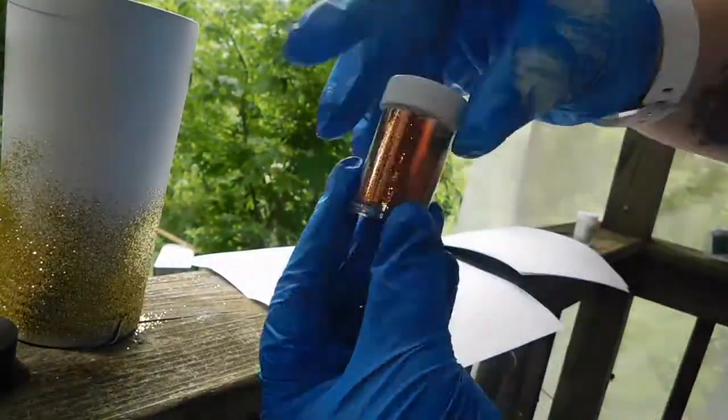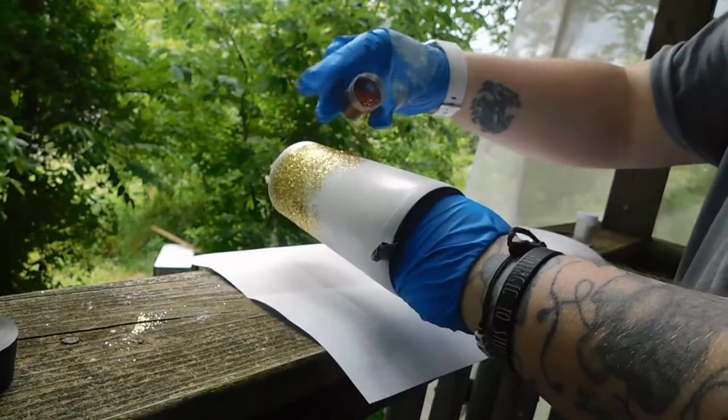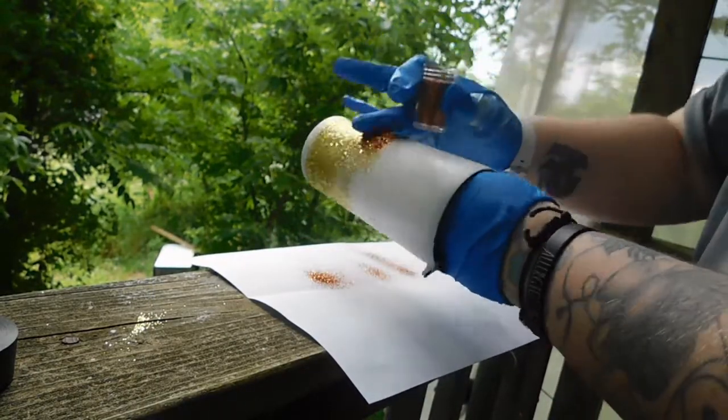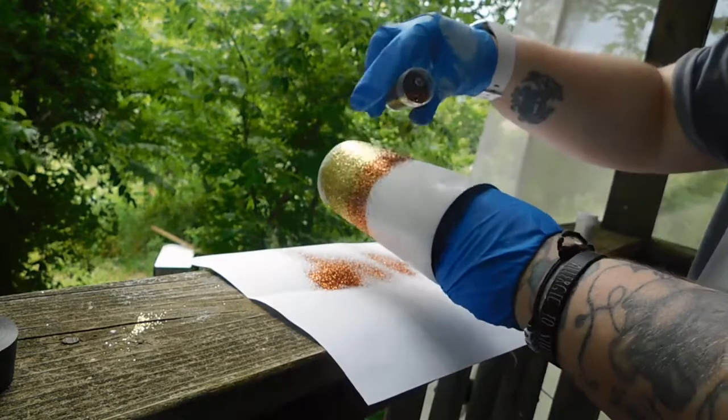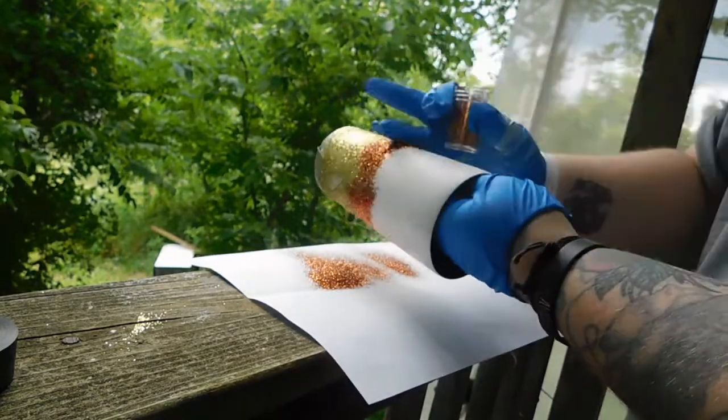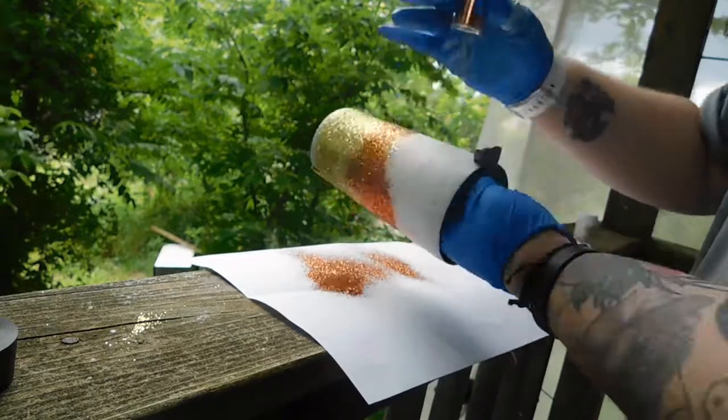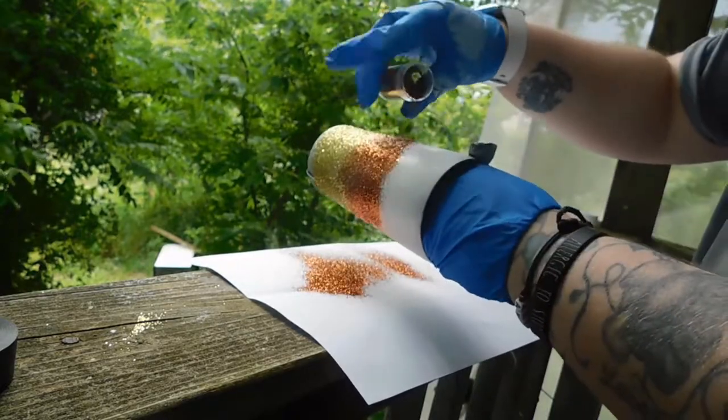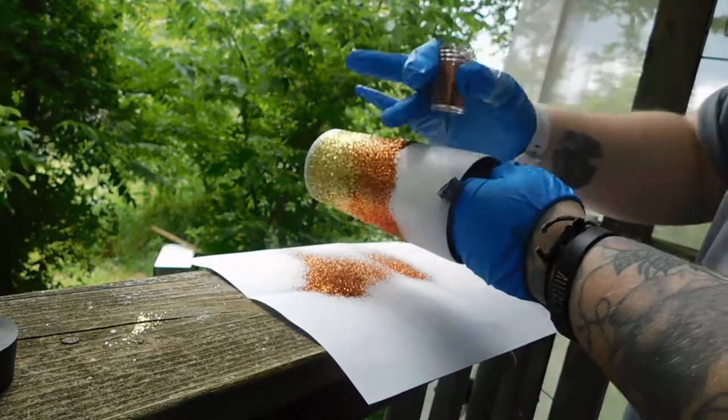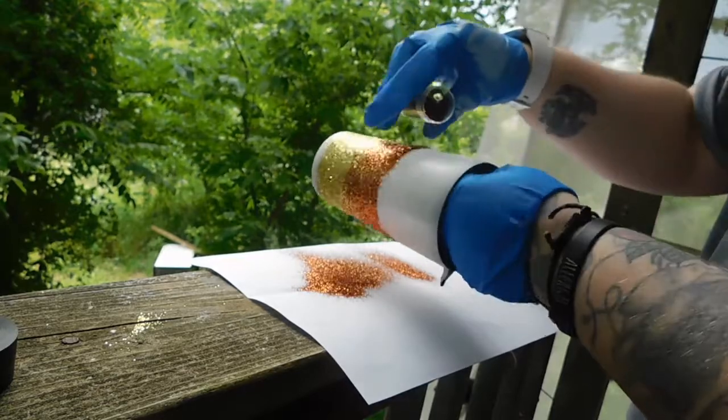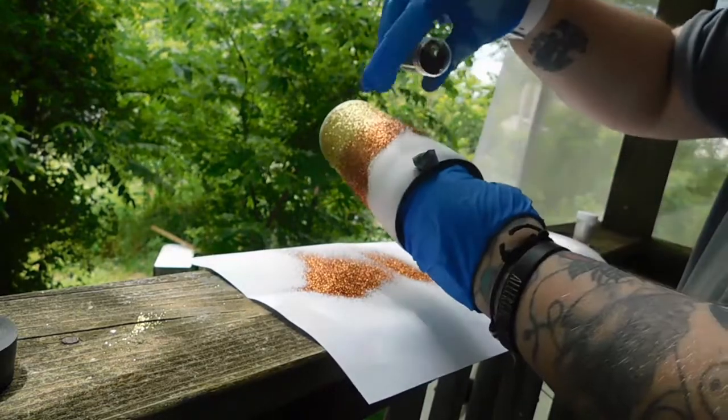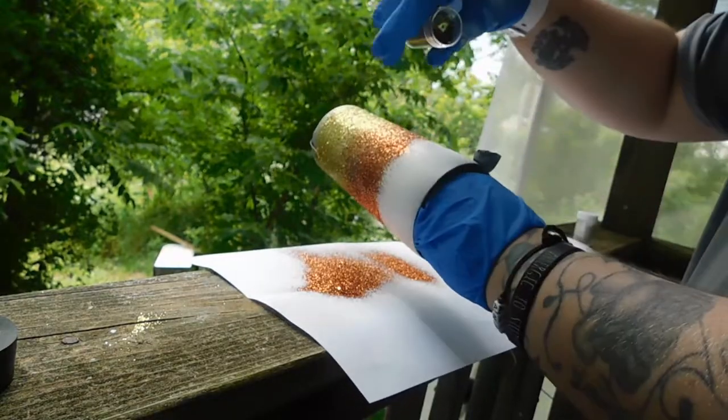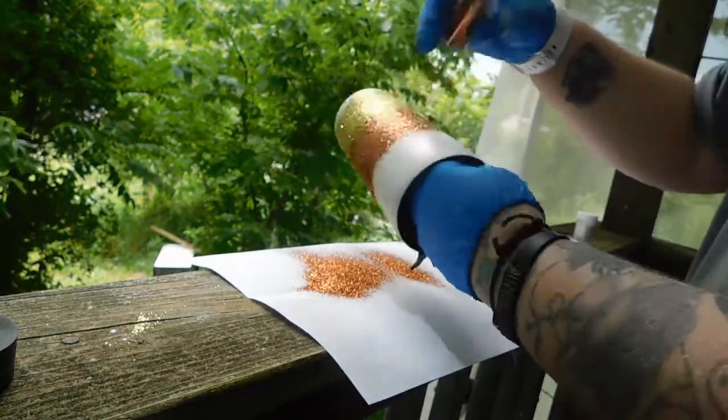Same thing with the orange—I'm gonna pack it in where the gold meets the orange, that way it gives it more of an ombre effect. And here I am really packing it into the cup. You're gonna take it a little further up so it drops in smaller sections, giving you more of an ombre effect.